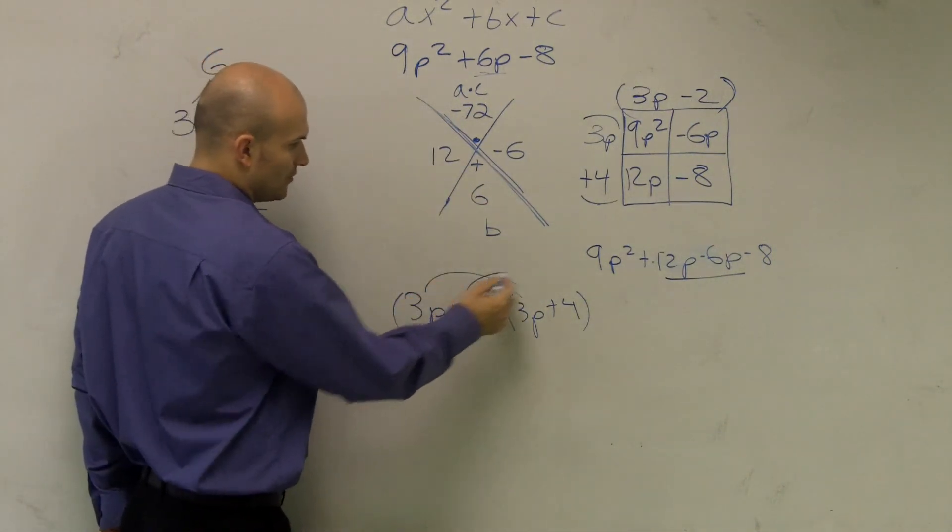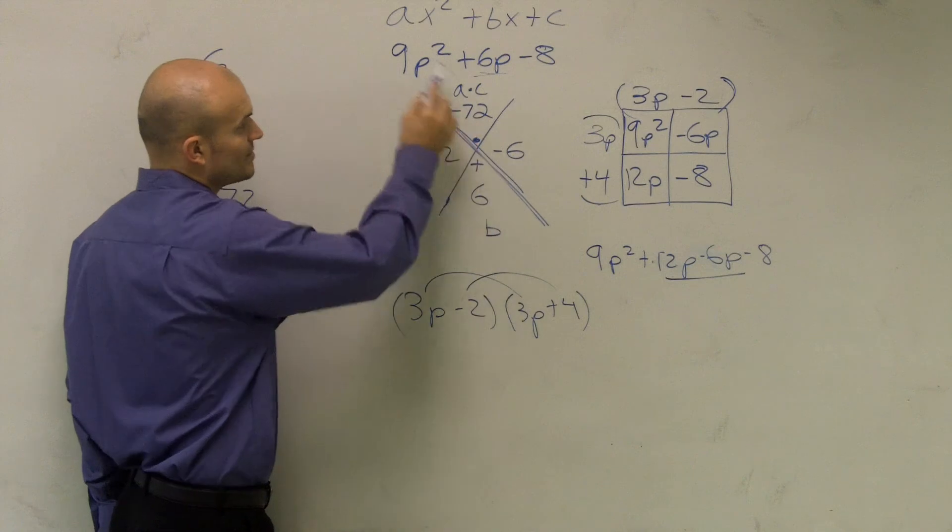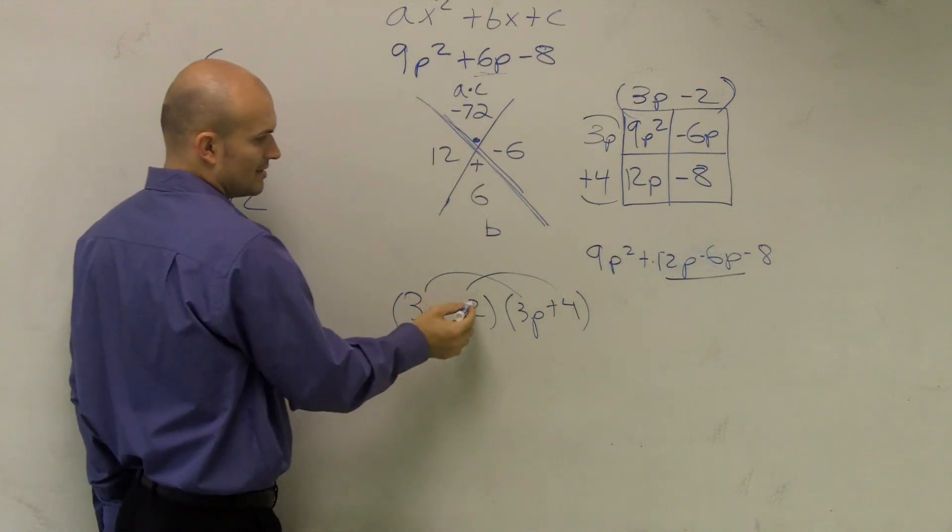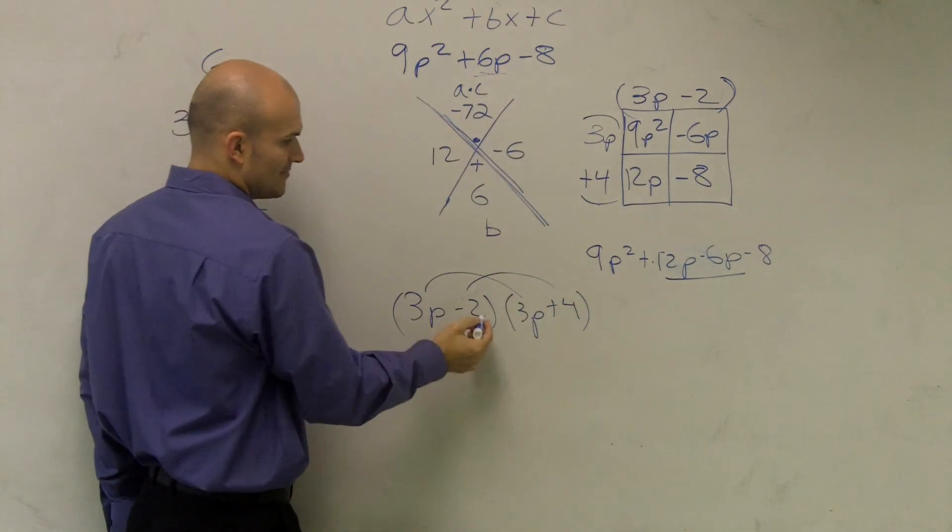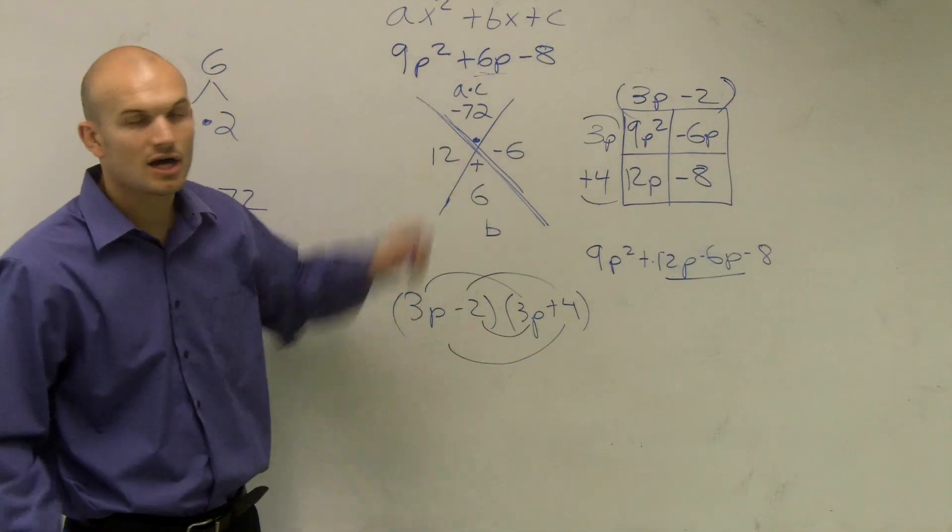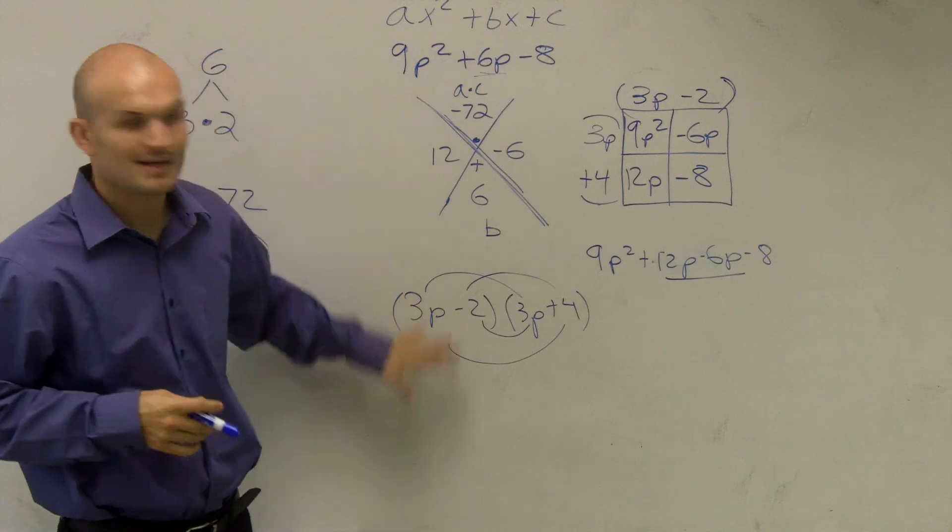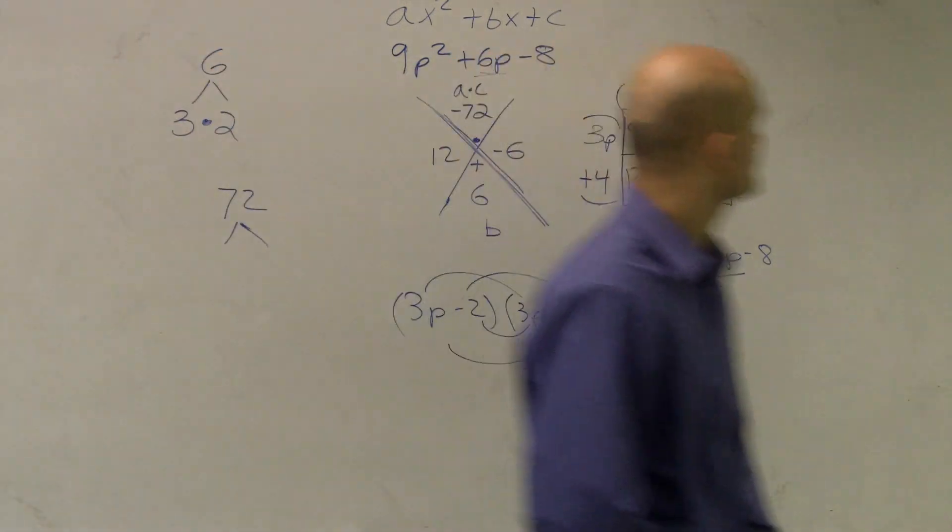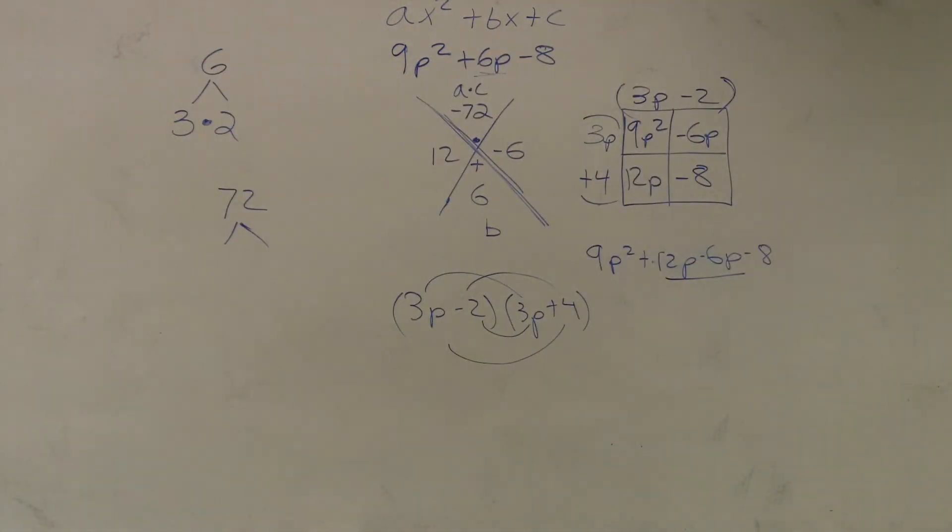And if we were just going to check our FOIL, first two terms, 3p times 3p gives us 9p². -2 times 8 gives us -8. And if I was to kind of do a little mental math by adding in my middle terms, I'll still get 6p, which works out. So therefore, that's another way to factor. You ever learn that way? Yeah. I've learned multiple times.